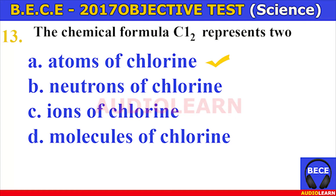Number twelve. The number of oxygen atoms present in three molecules of carbon dioxide is A. 3, B. 4, C. 5, D. 6. The answer is D. 6. Number thirteen. The chemical formula Cl₂ represents two A. atoms of chlorine, B. neutrons of chlorine, C. ions of chlorine, D. molecules of chlorine. The answer is A. atoms of chlorine.